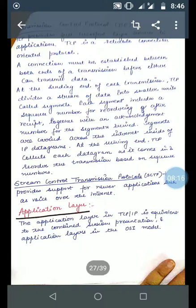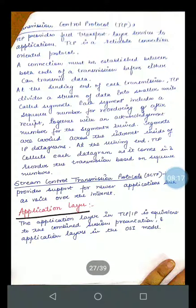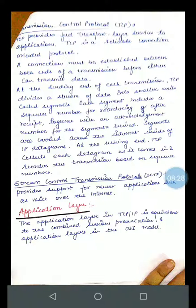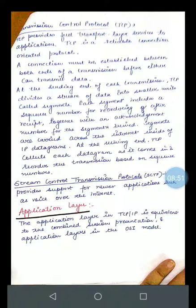Stream Control Transmission Protocol, SCTP, provides support for newer applications such as voice over internet, video, and other multimedia internet applications. Next, the Application layer in TCP/IP is equivalent to the combined Session, Presentation, and Application layers of the OSI model. All the working of those three OSI layers is handled together by the single Application layer in TCP/IP.